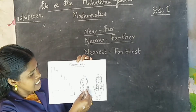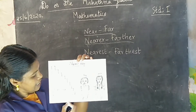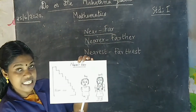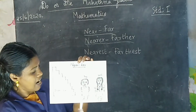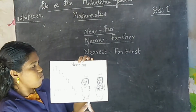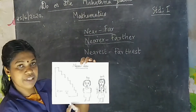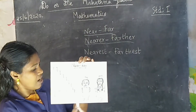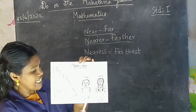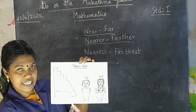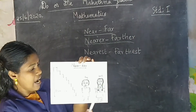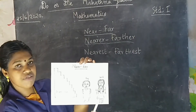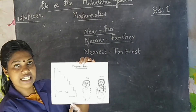Boy is near this staircase. Boy is near and girl is far from this staircase. And girl is far from this staircase.